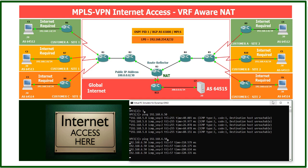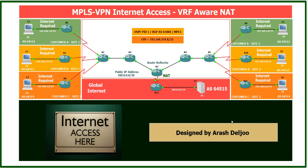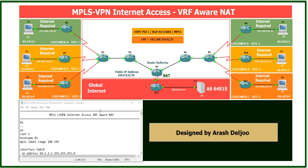Now we can start the configuration of VRF-Aware NAT. It's quite easy. I'm going to configure it first in a Notepad file, then copy the configuration into the CLI. In this configuration, unlike the previous video, we don't have NAT configured on the CE routers, so we can proceed to the next steps.